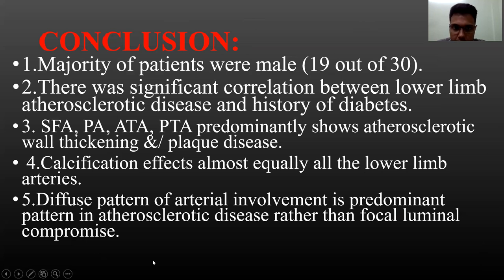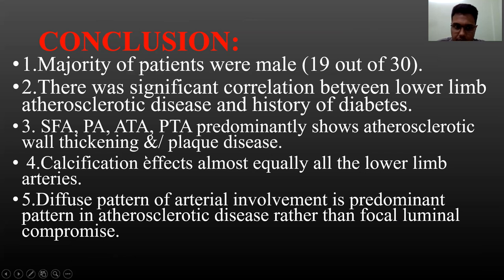In conclusion, the majority of patients were male — 19 out of 30. There was a significant correlation between lower limb atherosclerotic disease and history of diabetes. The superficial femoral artery, popliteal artery, anterior tibial artery, and posterior tibial artery predominantly showed atherosclerotic wall thickening and plaque disease. Calcification affects almost equally all the lower limb arteries. Diffuse pattern of arterial involvement is the predominant pattern in atherosclerotic disease rather than focal luminal components.